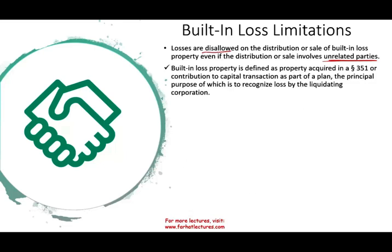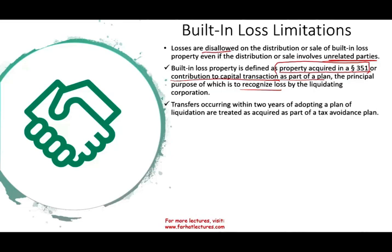How do we define built-in loss property? It's property acquired in a Section 351 transaction — it's very important to know it's Section 351. If Section 351 is not there, the built-in loss rules do not apply. Or it can be a contribution to capital as part of a plan whose principal purpose is to recognize a loss by the liquidating corporation — contributing property with the aim of eventually having the corporation dispose of it at a loss, with no business purpose. Transfers occurring within the past two years of adopting the plan are treated as acquired for a tax avoidance purpose, and any asset contributed to the company in the past two years is flagged for the built-in loss limitation.